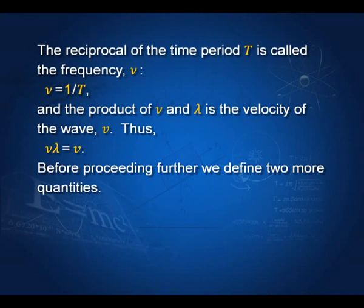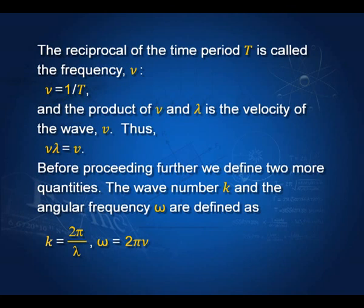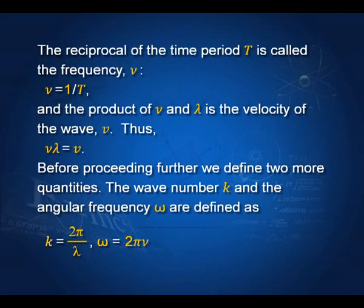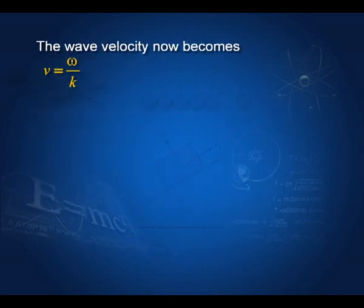Before proceeding further, we define two more quantities: the wave number k = 2pi/lambda, and angular frequency omega = 2pi*nu. We write equations in terms of k and omega because that is simpler. The wave velocity then becomes v = omega/k using these relations.